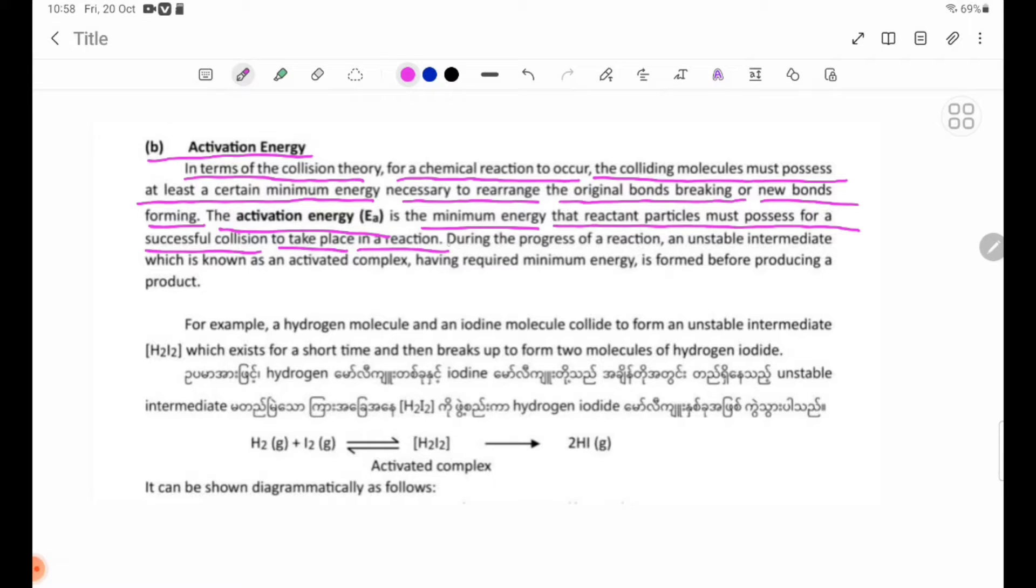During the progress of the reaction, an unstable intermediate, which is known as an activated complex, having required minimum energy, is formed before producing a product.